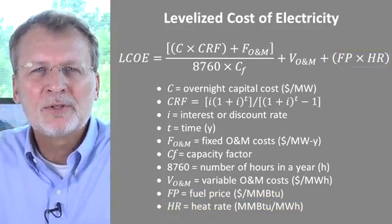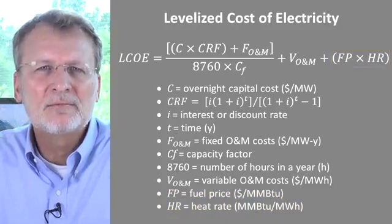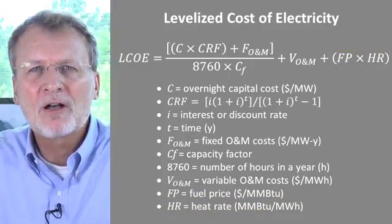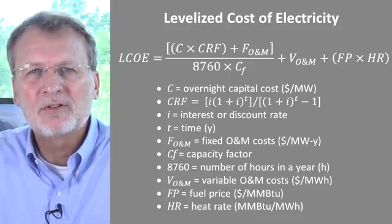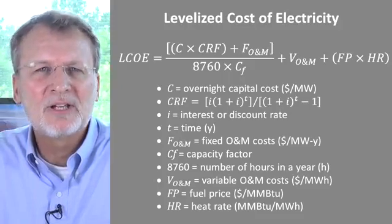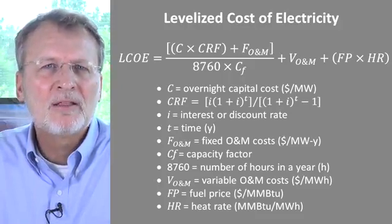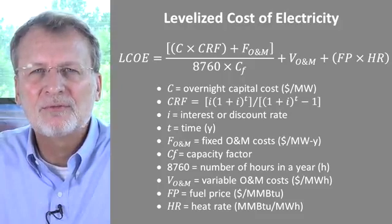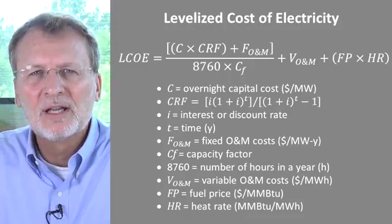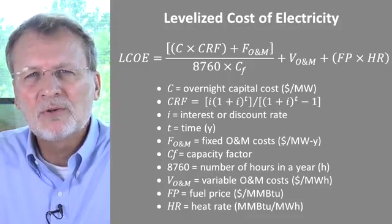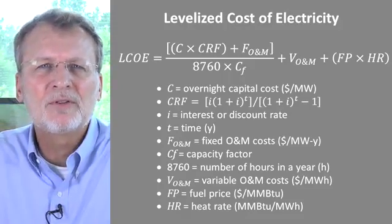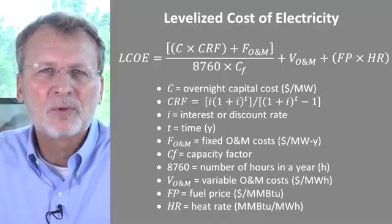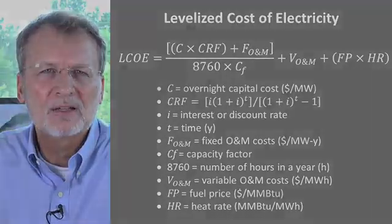Adding all these terms together — the amortized capital cost, the fixed cost per unit of expected electricity output, the variable cost, and the heat rate adjusted fuel cost — gives the total LCOE for the plant, which can then be compared to the LCOE for other plants.